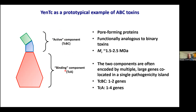These ABC toxins have molecular weights of around 1.5 to 2.5 megadaltons. The two components are often encoded by multiple large genes co-located in a single pathogenicity island — a key difference from prototypical binary toxins. The active component is usually encoded by two genes, though sometimes gene fusions mean it's a single gene. The binding component is encoded by anywhere from one to four genes. The Y. entomophaga example I'll discuss today is one of the more complex versions, encoded by four genes.